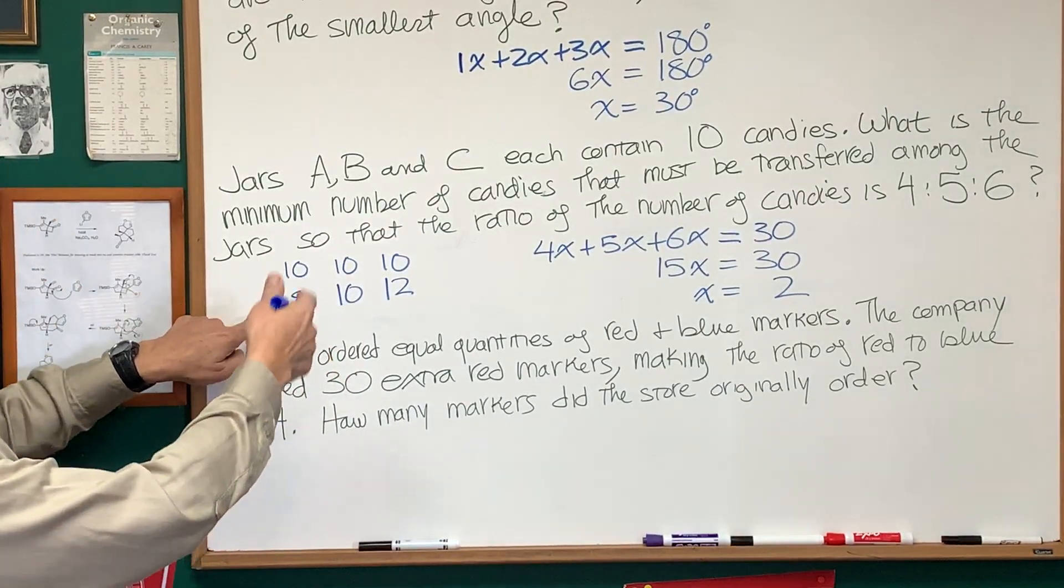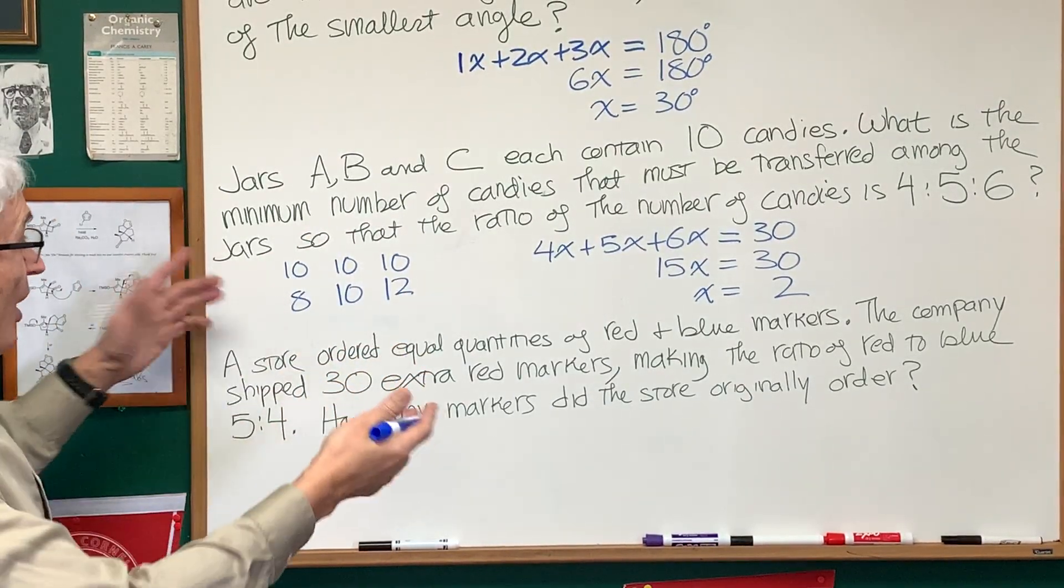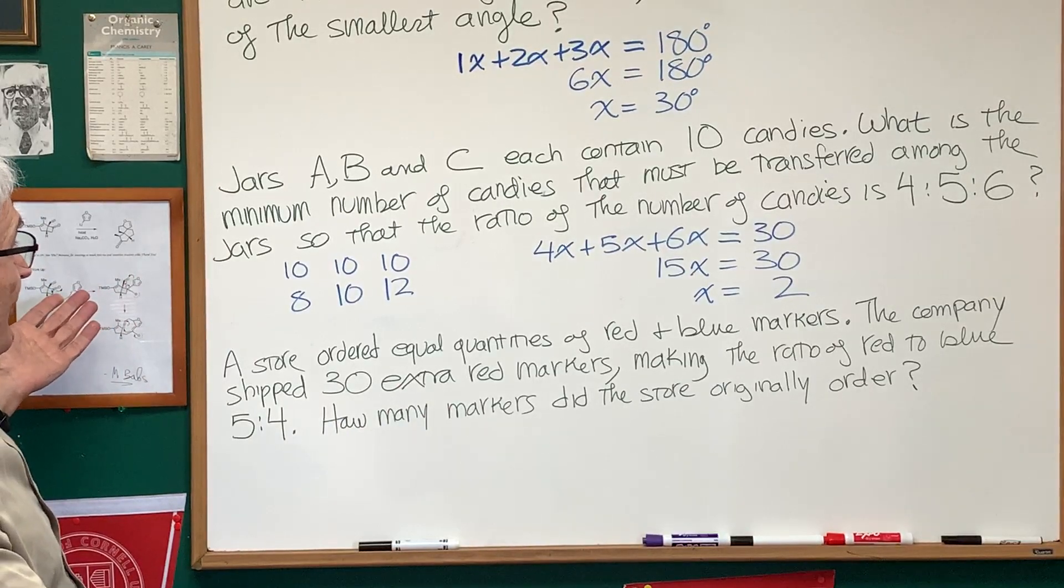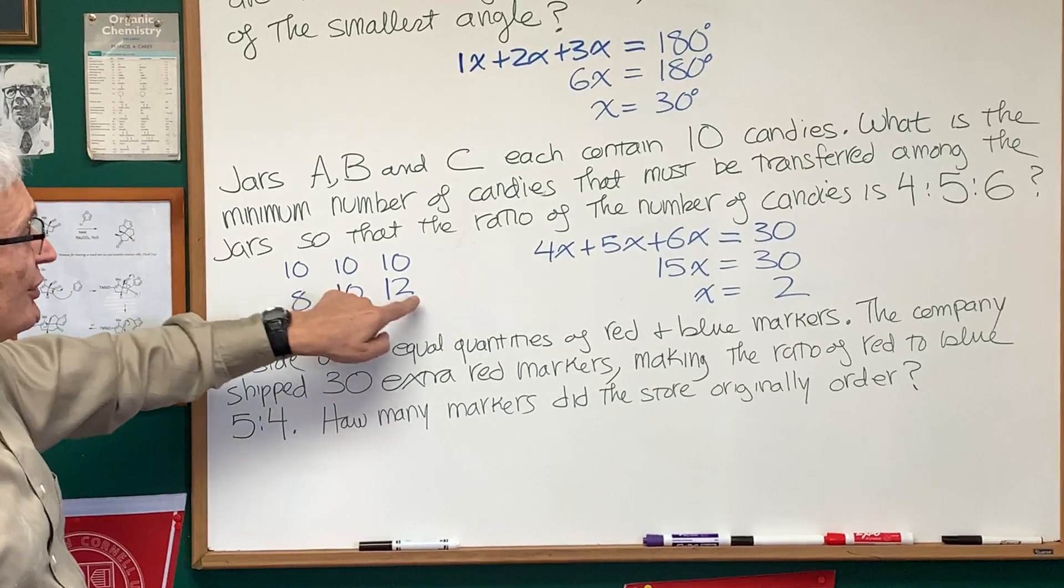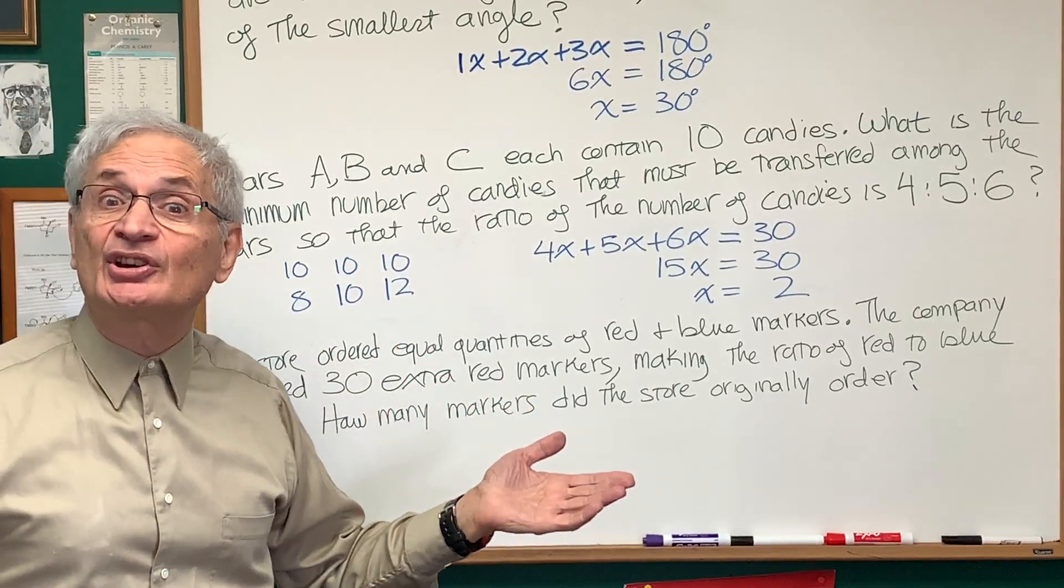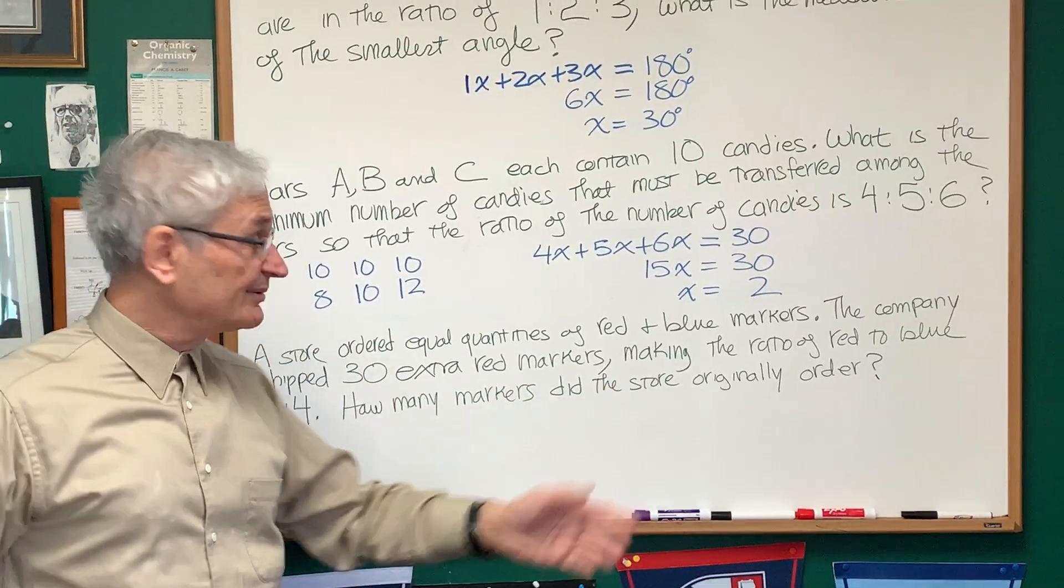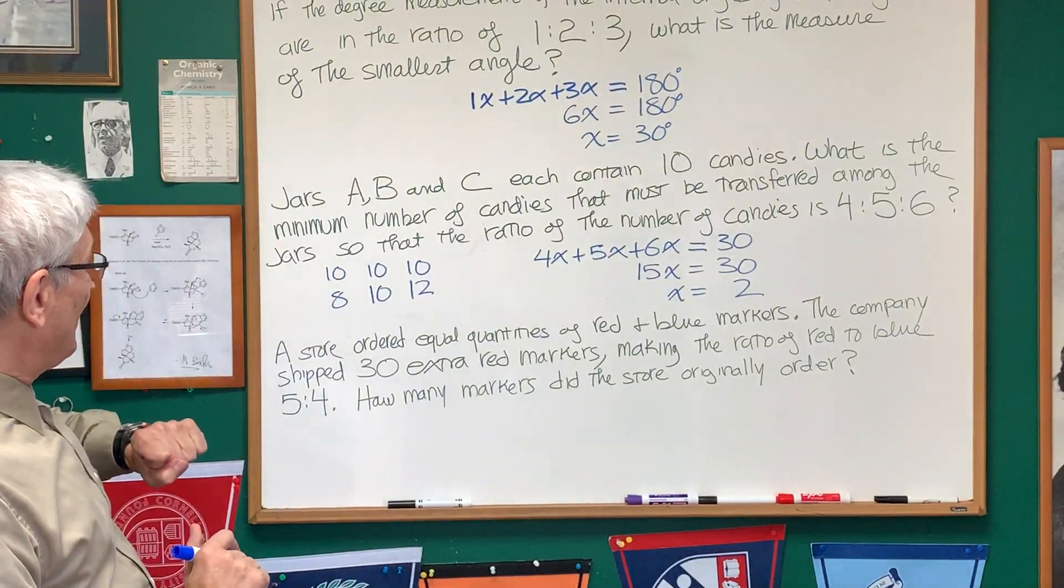We want to finish with 8, 10, 12, the 4, 5, 6 ratio. What is the minimum number of candies we need to move? We need to move 2 candies from jar A to jar C. The answer is 2, and that's it. That was very nice and straightforward.